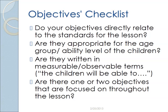But perhaps you're working in an inclusion class in which you have some children who are at a lower level, or you're working in a gifted and talented school in which some children are at a higher ability level. So you're going to want to make adjustments in your lesson plan. Are they written in measurable, observable terms? Check to make sure there's only one or two objectives focused on throughout the lesson.